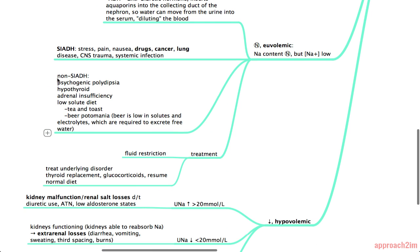And the next branch is non-SIADH mechanisms. And these ones again you just need to memorize these. So there's psychogenic polydipsia. Often these patients will drink ridiculous amounts of water per day because of an insatiable thirst. And then we have hypothyroidism, adrenal insufficiency, and a low solute diet.